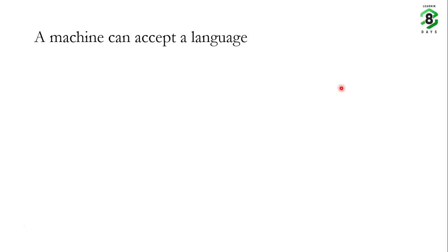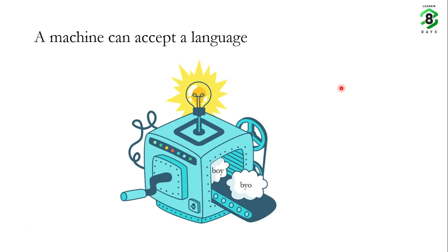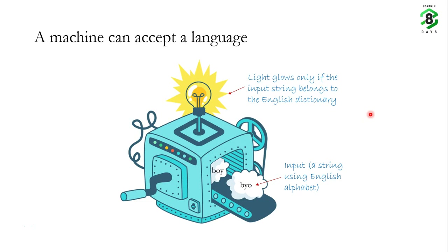A machine can be thought of as a device which can accept a language. For example, here is a machine in which we can send inputs which are strings using English alphabets — we can send an input like 'boy' or 'byo'. There is a light which glows only when the input string belongs to the English dictionary. If you send a correct word like 'boy', which is present in the English dictionary, the light will glow. But if you send a word not present in the dictionary like 'byo', the light does not glow. Whenever the light glows, we understand that the string we sent is part of the English dictionary. In other words, this machine accepts all words in the English language, and such a hypothetical machine can behave like an accepting device which accepts a language.